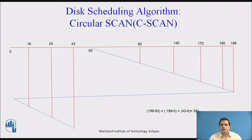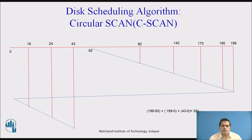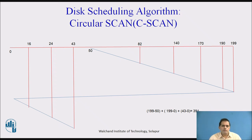To calculate the total head movements: moving from 50 to 199 is (199 − 50), then from 199 to 0 is (199 − 0), then from 0 to 43 is (43 − 0). The total is 149 + 199 + 43 = 391. So 391 is the total number of track movements taken to move the head from one track to another.